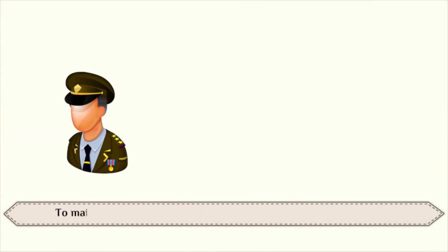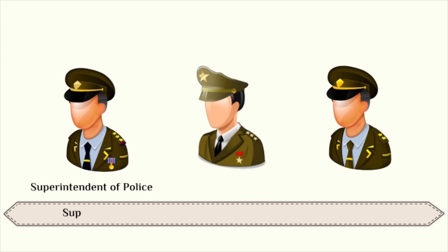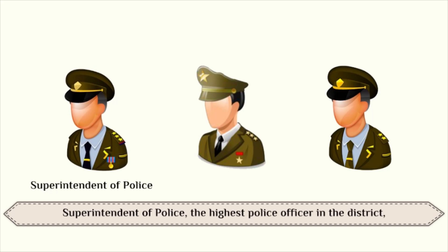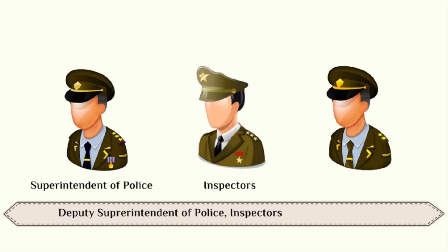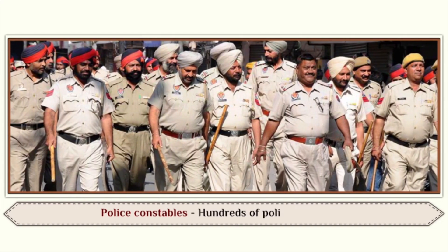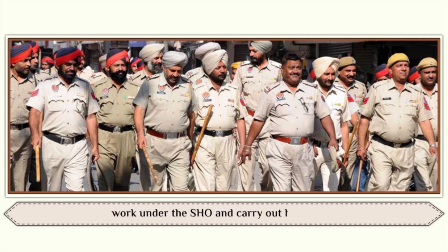To maintain law and order in the district, the Collector is assisted by the Superintendent of Police, the highest police officer in the district; Deputy Superintendent of Police; Police Inspectors and Sub-Inspectors; and the Station House Officer. Hundreds of police constables work under the SHO and carry out his orders.